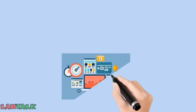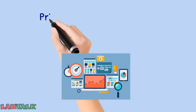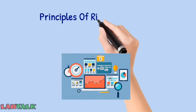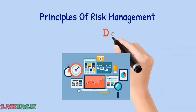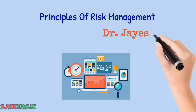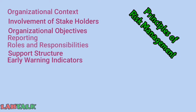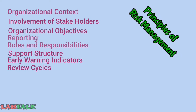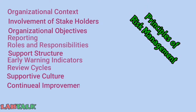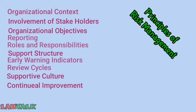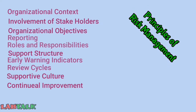Before looking into the actual process of risk management, let us see the various principles of risk management. To list them: organizational context, involvement of stakeholders, organizational objectives, reporting, roles and responsibilities, support structure, early warning indicators, review cycle, supportive culture, and continual improvement.